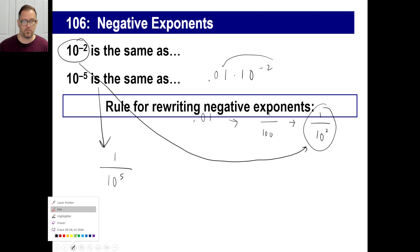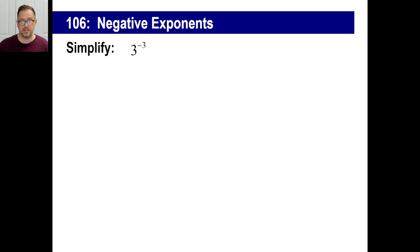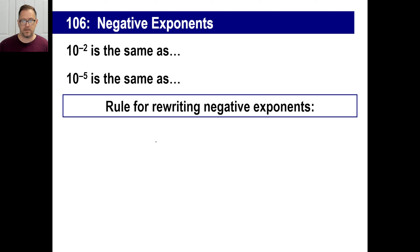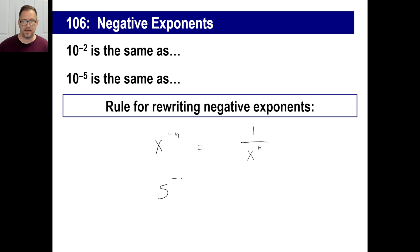So that's the rule. A rule for rewriting negative exponents: x to the negative n is the same thing as 1 over x to the positive n. And there you go. It doesn't have to be 10 — any number works. For example, 5 to the negative 3 power is the same thing as 1 over 5 to the positive 3.